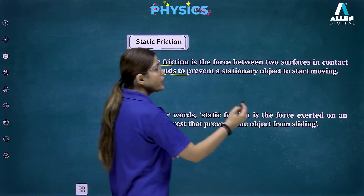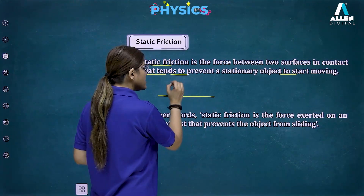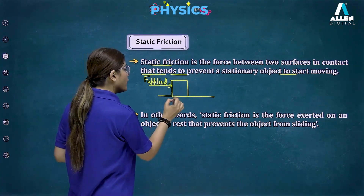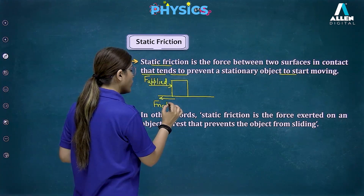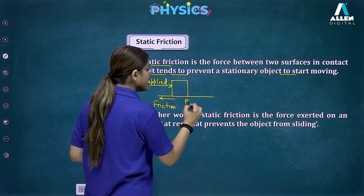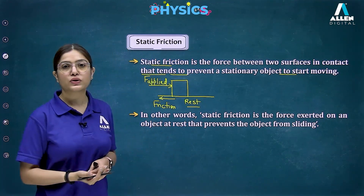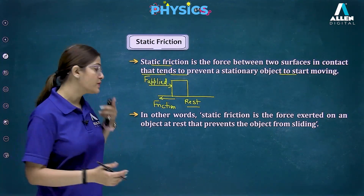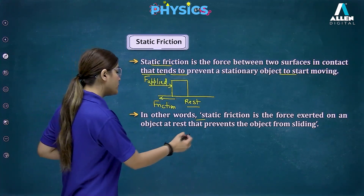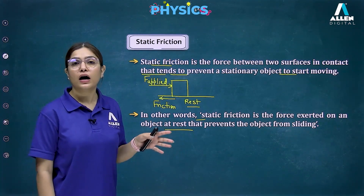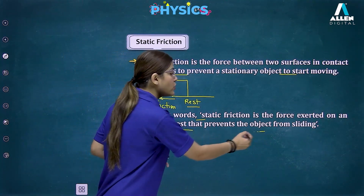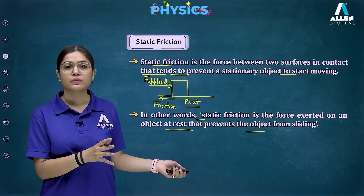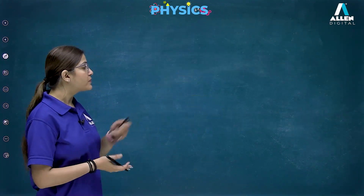Imagine a surface with an object placed on it. When we apply a force F-applied, friction acts in the opposite direction. The object remains at rest, meaning static friction is greater than the applied force. Static friction is the force exerted on an object at rest that prevents it from sliding.